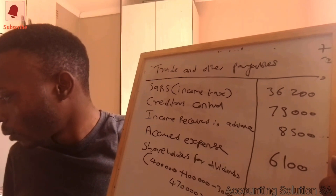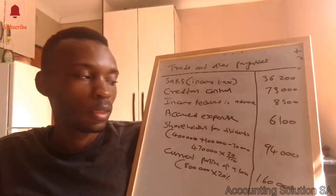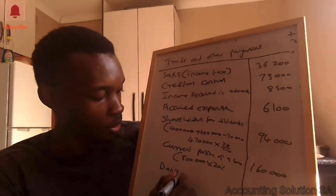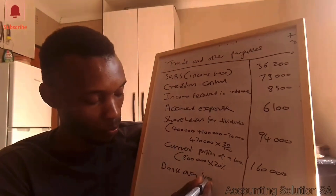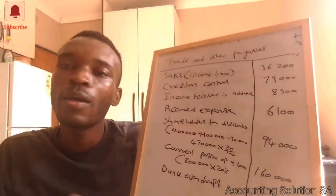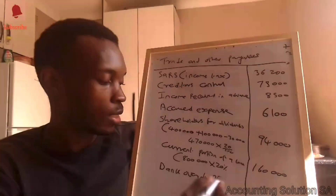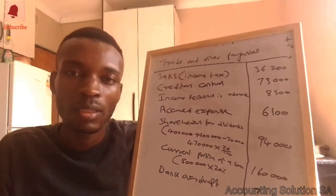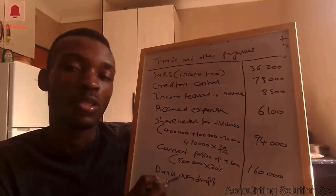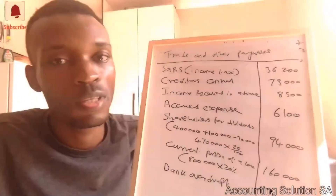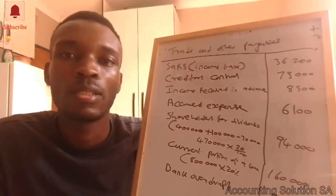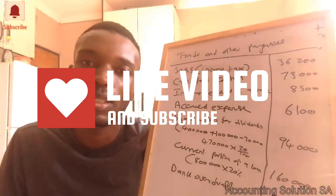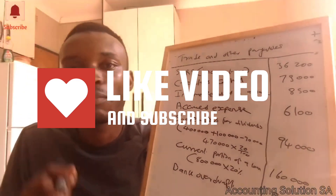The last item was the bank overdraft, which is a liability. However, we won't be able to calculate the bank overdraft balance in this video because it requires completing the full balance sheet first - it becomes a balancing figure. Please stay on this channel as more videos will be uploaded to help you prepare for your exam.